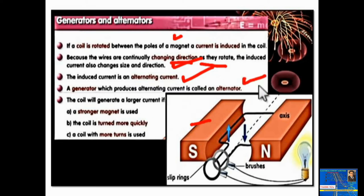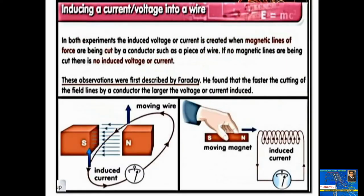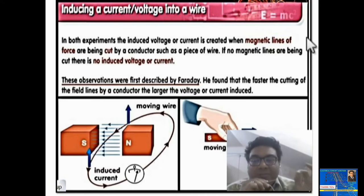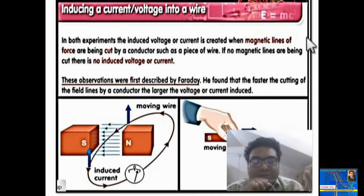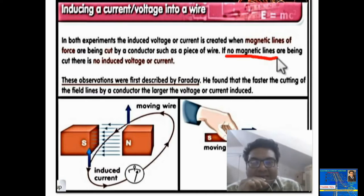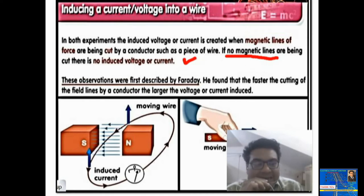In both experiments, the induced voltage or current is created when magnetic lines of force are being cut by a conductor. In both ways, EMF is induced — either by rotating the rectangular coil or by moving the magnets. If no magnetic lines are being cut, there is no induced EMF or voltage.